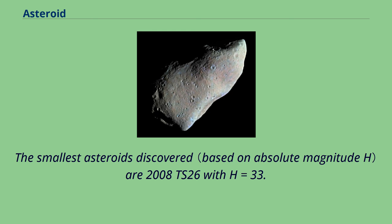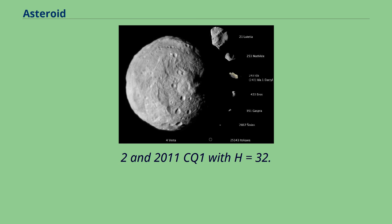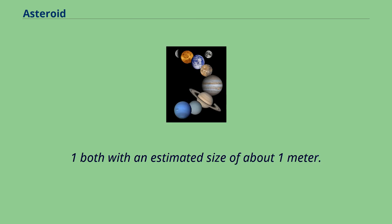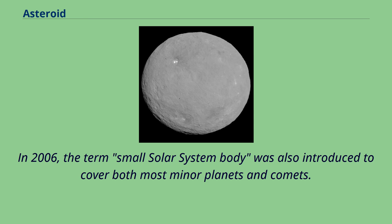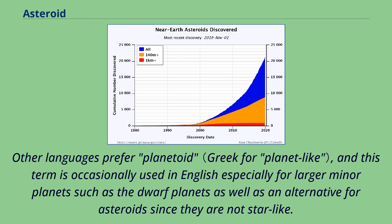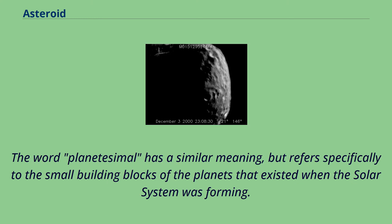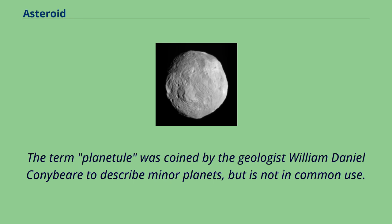The smallest asteroids discovered are 2008 TS-26 with H=33.2, and 2011 CQ-1 with H=32.1, both with an estimated size of about 1 meter. In 2006, the term 'small solar system body' was also introduced to cover both most minor planets and comets. Other languages prefer 'planetoid,' and this term is occasionally used in English, especially for larger minor planets such as dwarf planets. The word 'planetesimal' refers specifically to the small building blocks of the planets that existed when the solar system was forming.